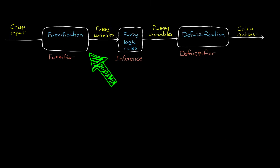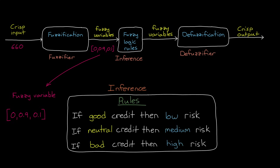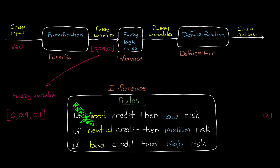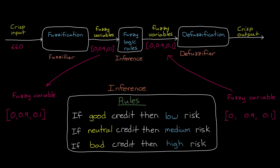With this fuzzy number, we can move to the second step: inference. What can we infer from this fuzzy value given the logical rules that we set up? Is credit good? Well, it's 10% good, so then risk is 10% low. Is credit neutral? It's 90% neutral, so risk is 90% medium. And is credit bad? No, it's 0% bad, so risk is 0% high. This gives us another fuzzy variable that just so happens to be the same numbers of 0.9 and 0.1, but this is only because of the simple rules that we set up. In general, these logical rules could create new fuzzy variables that are drastically different.